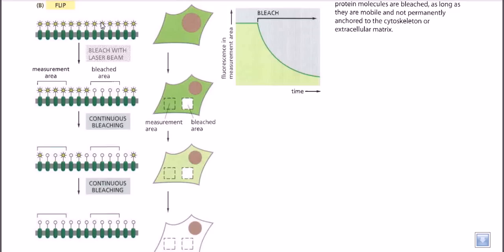According to the fluid mosaic model, phospholipids are not stable — they are motile and can move from one place to another via lateral movement as well as flip-flop movement. So how can we prove this movement using the FLIP experiment?